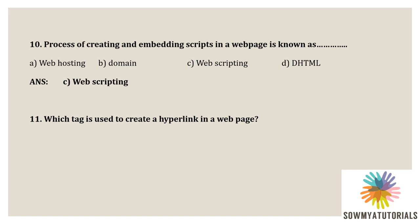Which tag is used to create a hyperlink in a web page? Option A: H1 tag. Option B: Li tag. Option C: P tag. Option D: A tag. The correct option is the A tag — A means anchor tag. The anchor tag is used for creating a hyperlink in a web page.